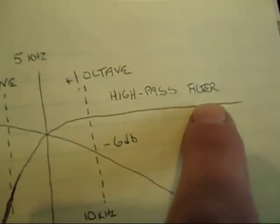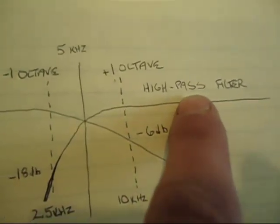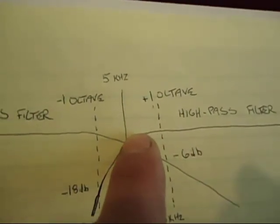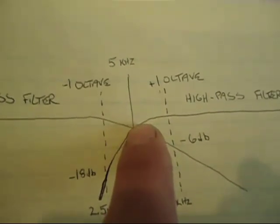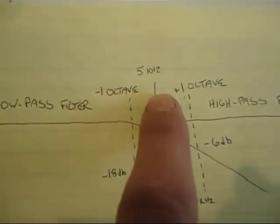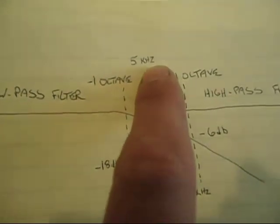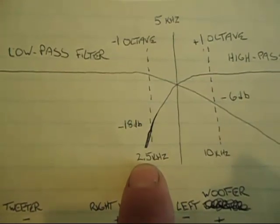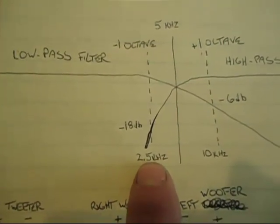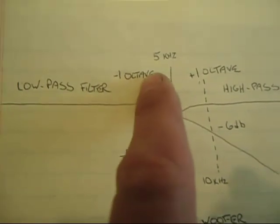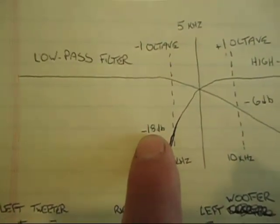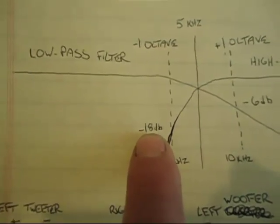So what that means is on my high pass filter, the slope's gonna maybe start a little bit before 5,000 hertz, but at half of 5,000 hertz—2,500 hertz, that's one octave—it's gonna be down 18 decibels.